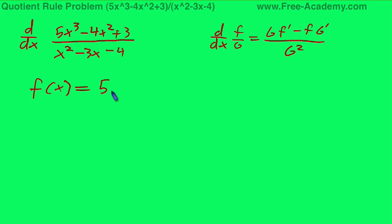So our f of x is going to be the top: 5x to the third minus 4x squared plus 3. Our g of x will be the bottom which is x squared minus 3x minus 4.